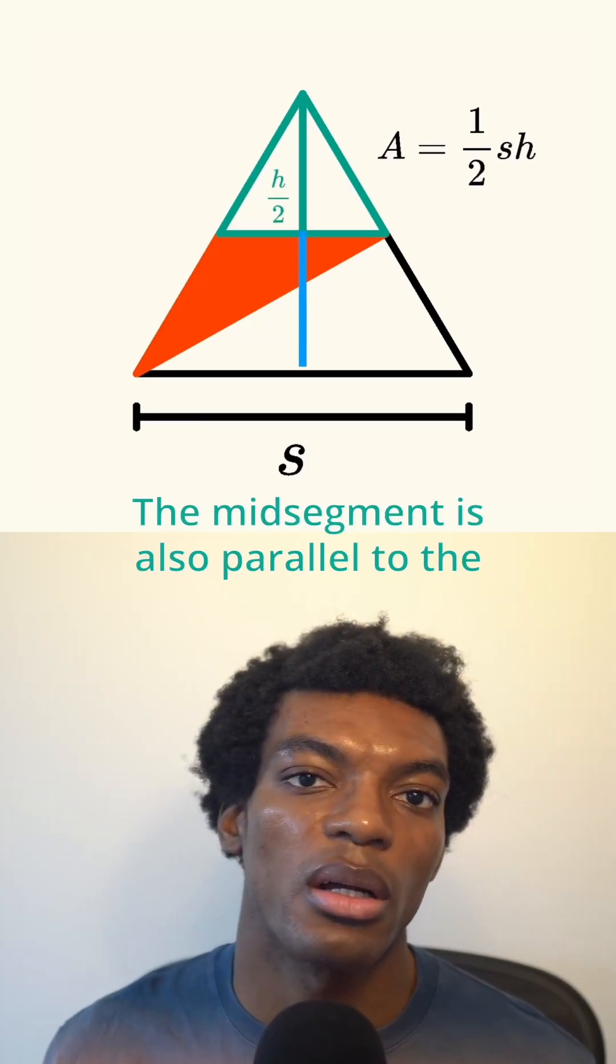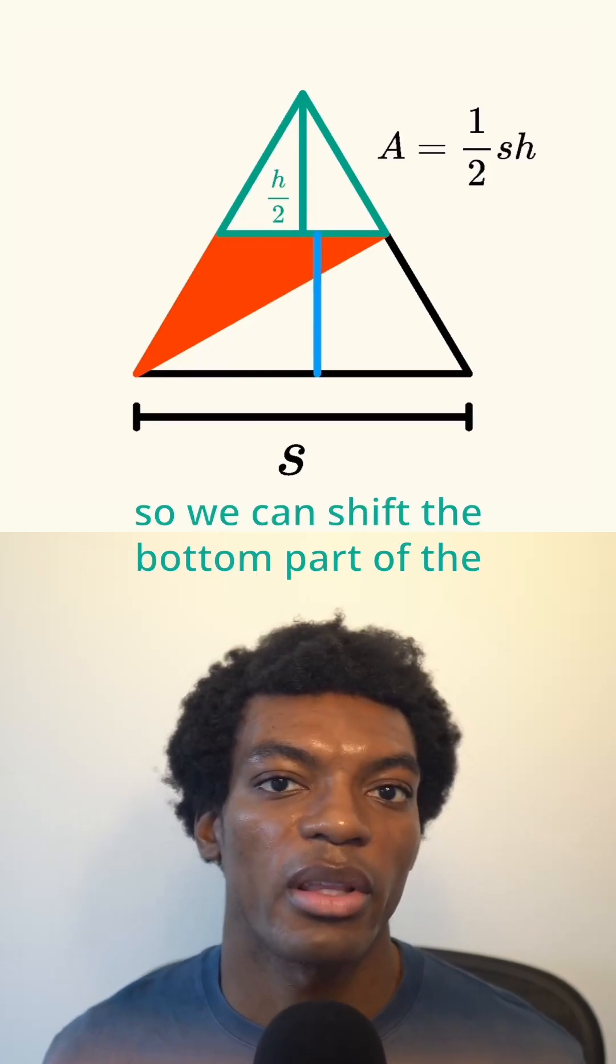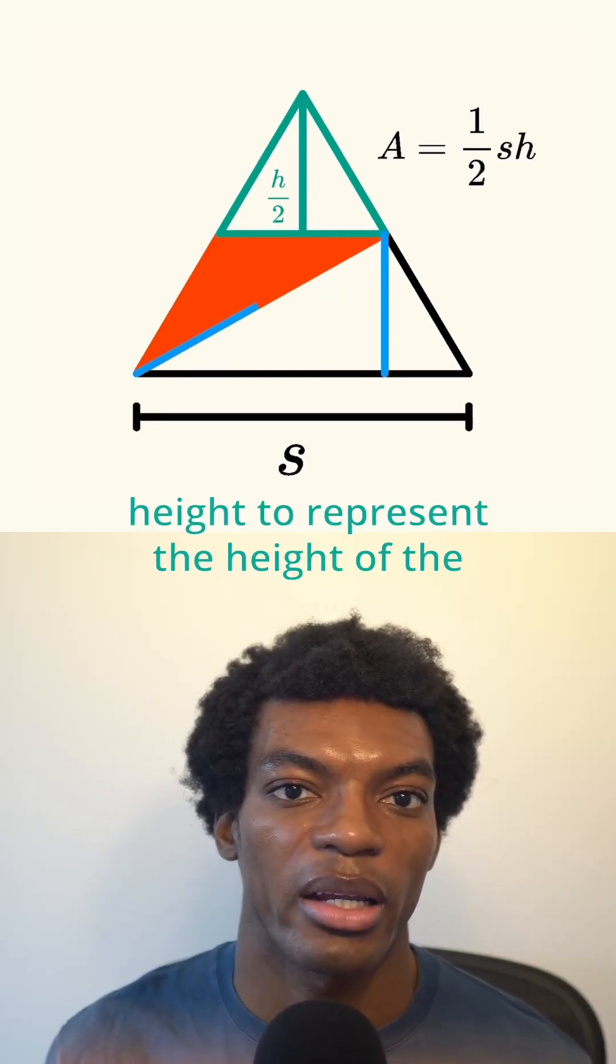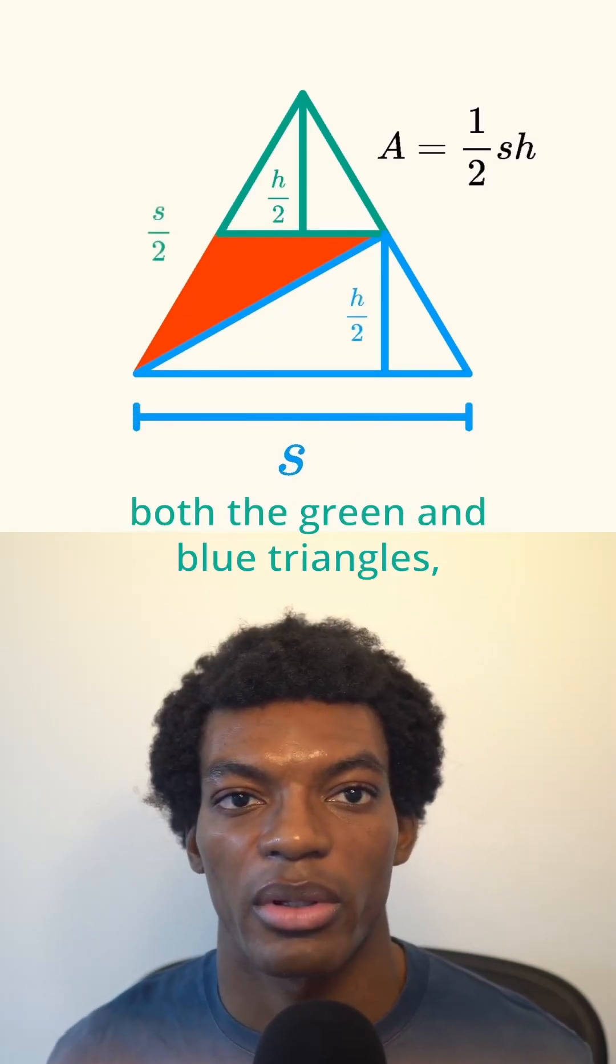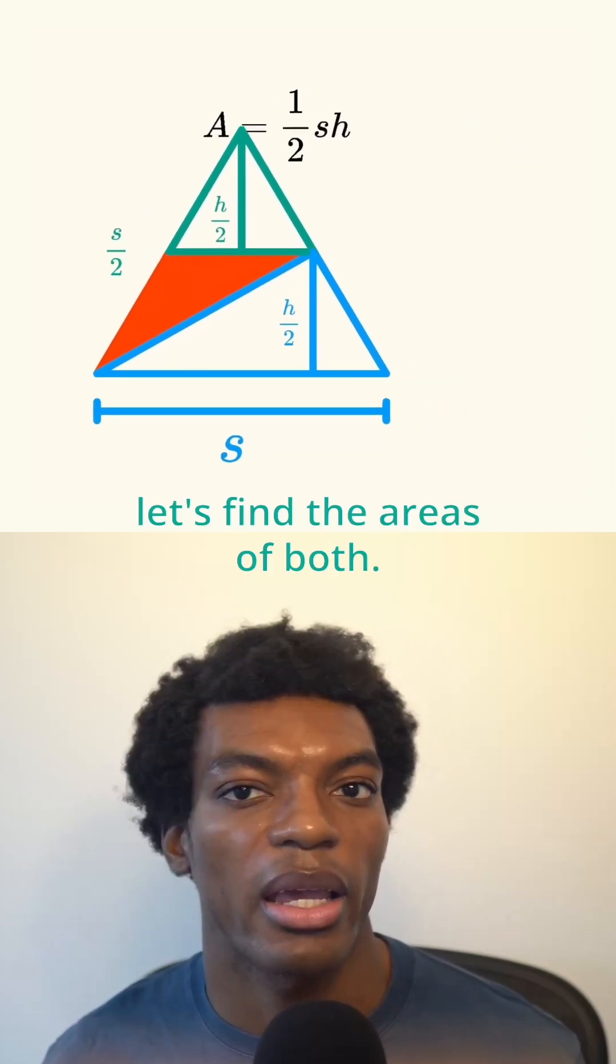The mid-segment is also parallel to the base of the triangle, so we can shift the bottom part of the height to represent the height of the bottom blue triangle. Now that we have the base and height of both the green and blue triangles, let's find the areas of both.